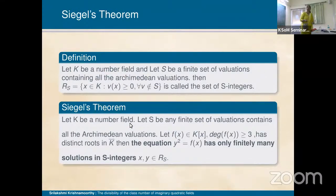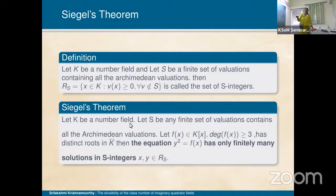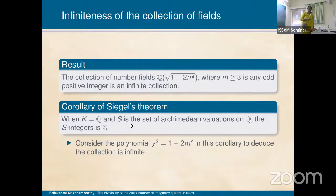I will give a brief sketch of the results. Before that, I need to state Siegel's theorem. K is any number field, S is a finite set of valuations containing the Archimedean valuations, and the set of S-integers consists of elements where all non-S valuations are non-negative. Siegel's theorem says: if F(x) is a polynomial in K[x] of degree ≥ 3 with distinct roots in the algebraic closure of K, then the equation has only finitely many solutions in R_S — in S-integers.